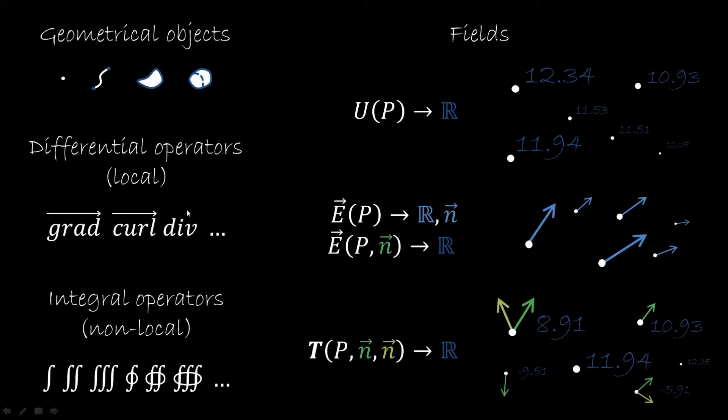Then we'll have some operators that we use to extract information about the field. We're going to have differential operators, which are local, which will tell us something about the fields around a point. And then we'll have integral operators that tell us something about the fields along a line, a surface or inside a volume.